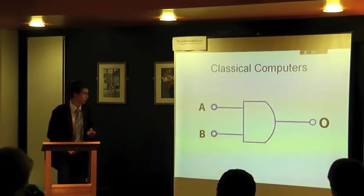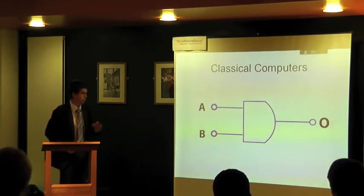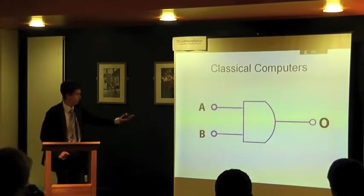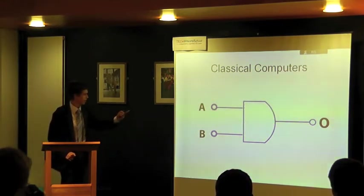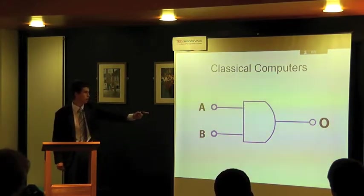They function using tiny components called logic gates. Logic gates take inputs, they do some process to them, and then they give an output. This gate here is called an AND gate. It will take an input A and an input B, and it will produce an output O.